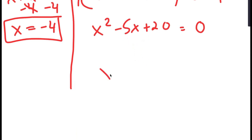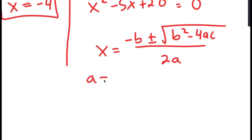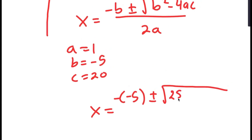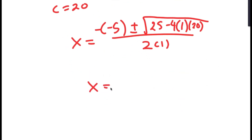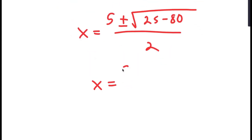To solve this, I'm going to use the quadratic formula, which is negative b plus or minus the square root of b squared minus 4ac all over 2a. In this case, a is 1, b is negative 5, and c is 20. So I get x is equal to 5 plus or minus the square root of negative 5 squared, which is 25, minus 4 times 1 times 20, all over 2 times 1. This is equal to 5 plus or minus the square root of 25 minus 80 over 2, which is 5 plus or minus the square root of negative 55 over 2.